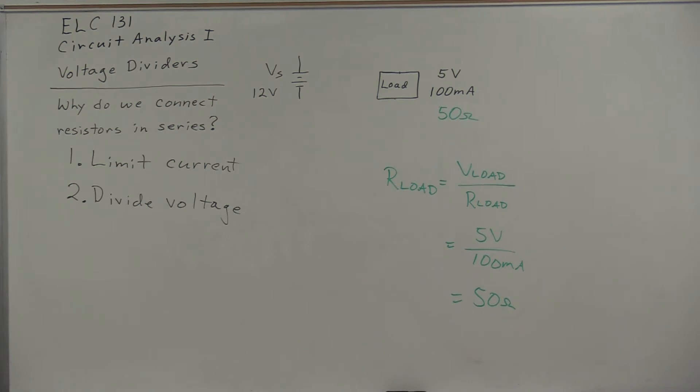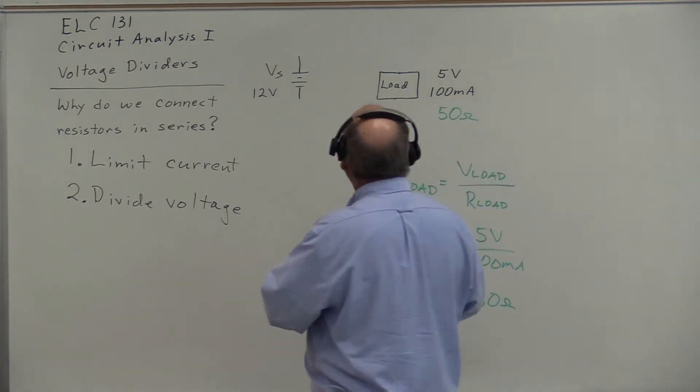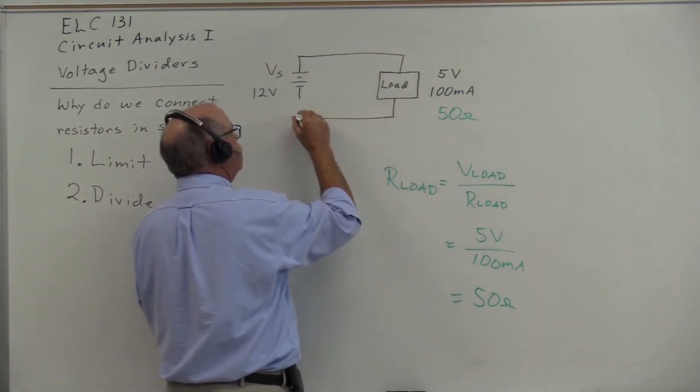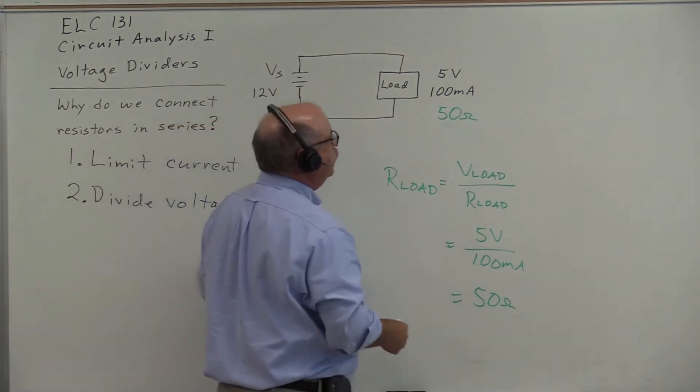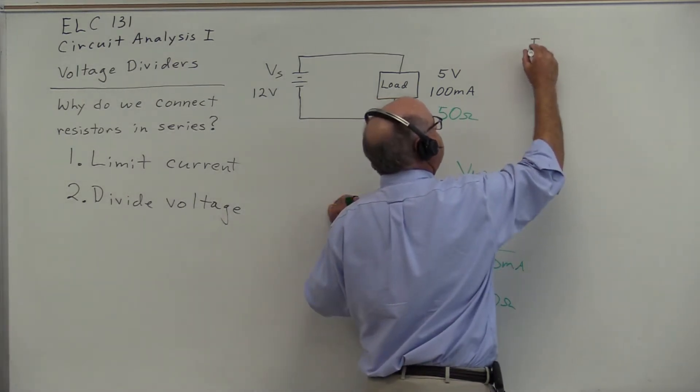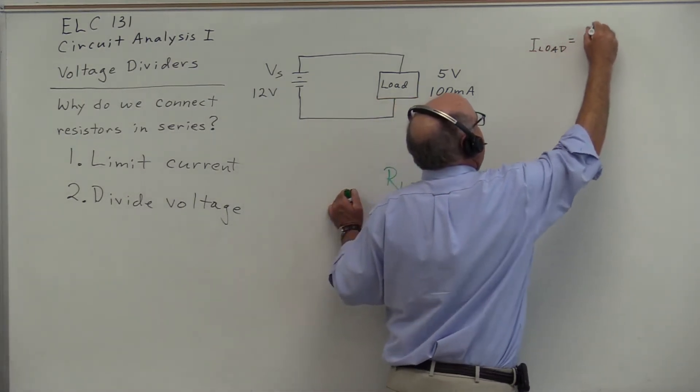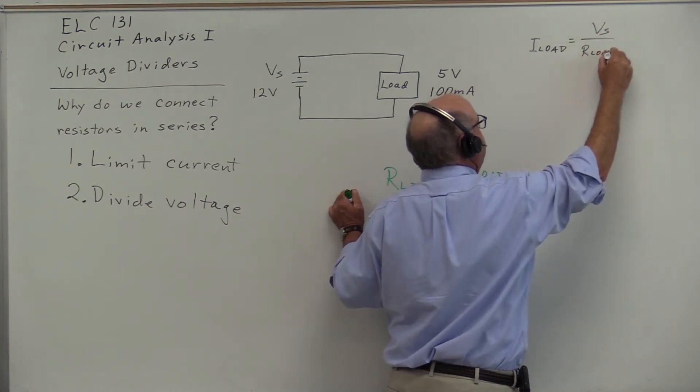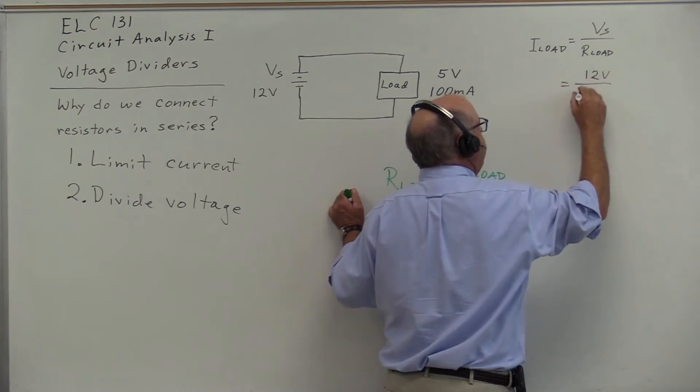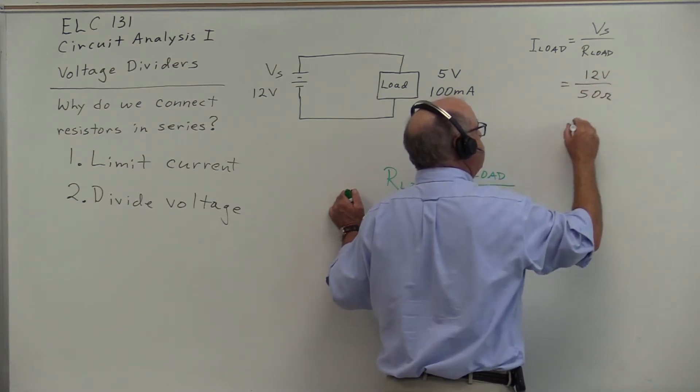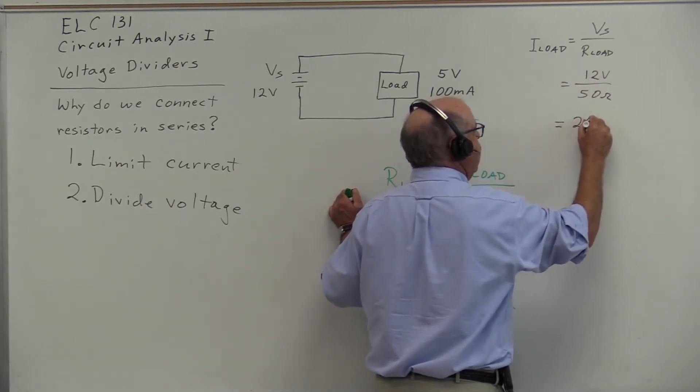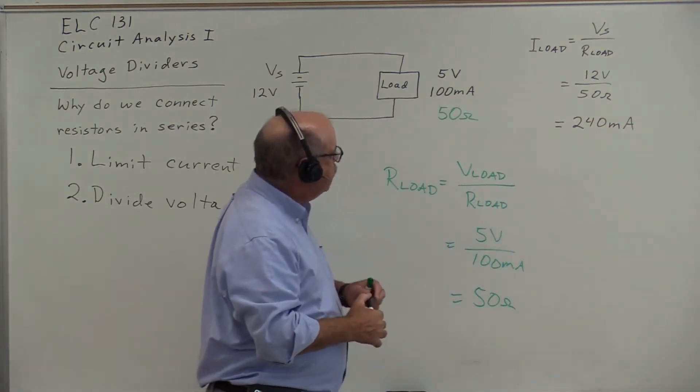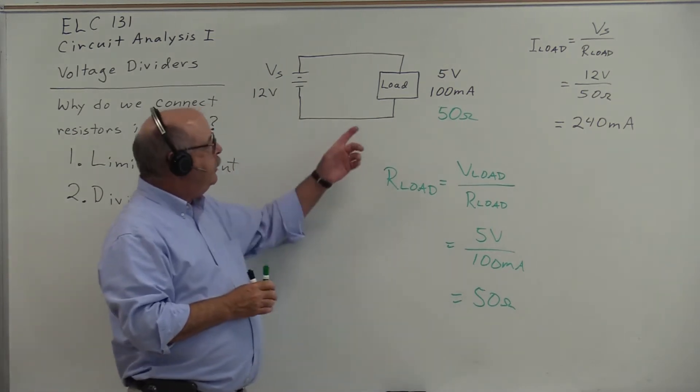The answer is probably not. If I connect this 12 volt source directly to the load, then the current through the load would be V_source divided by R_load, 12 volts divided by 50 ohms, giving us a current of 240 milliamps. This large of a current could damage or destroy the load.